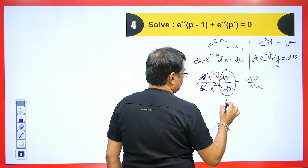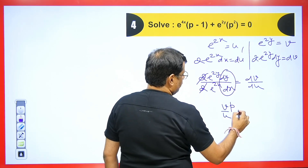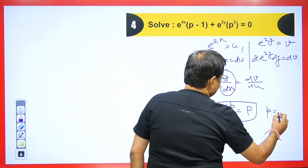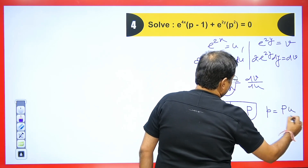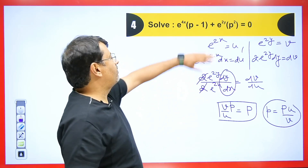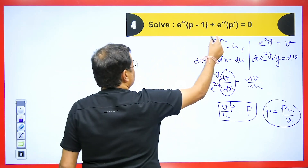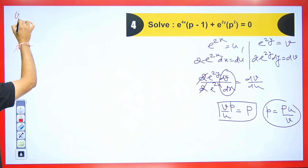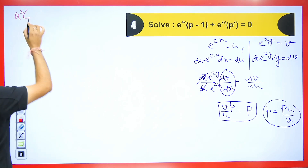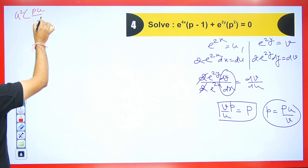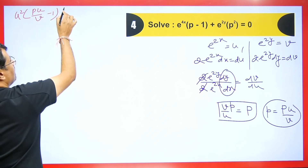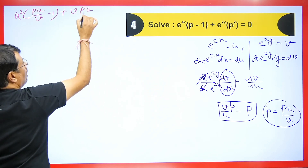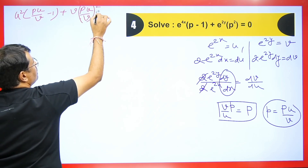So dv/du = (e^(2y)/e^(2x))·p, and the 2's cancel. Defining capital P = dv/du = (v/u)·p, we get small p = P·(u/v). Now substituting: e^(4x) = u², and e^(2y) = v. Replacing small p with P·(u/v), we substitute into the original equation and simplify.